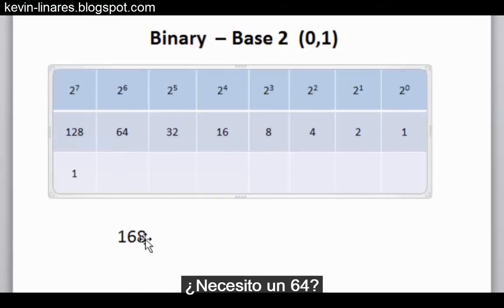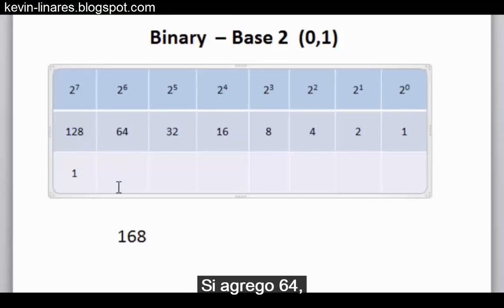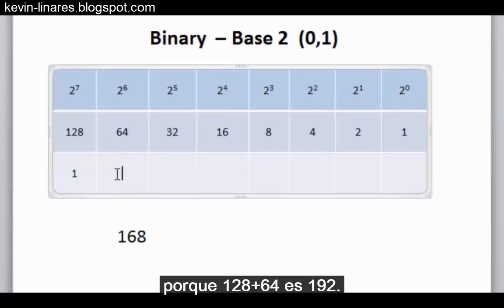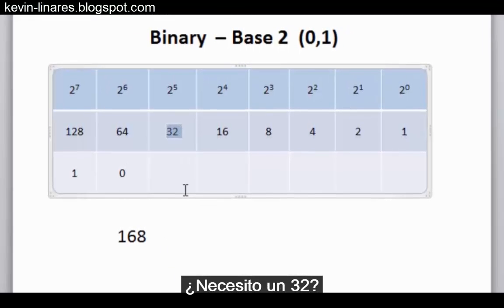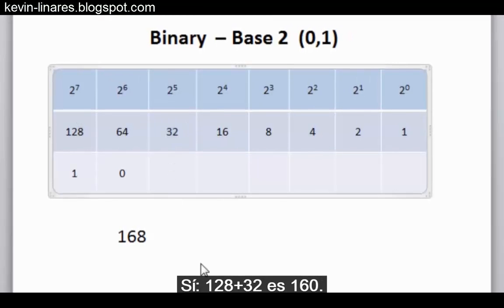Now do I need a 64? I already have a 128. If I add 64, I would get 192 because 128 plus 64 is 192. So the answer is no, so I put a 0. I still have 128 now. Now do I need a 32? 128 plus 32 is 160, so yes, I could use a 1 here. Now I have 160.